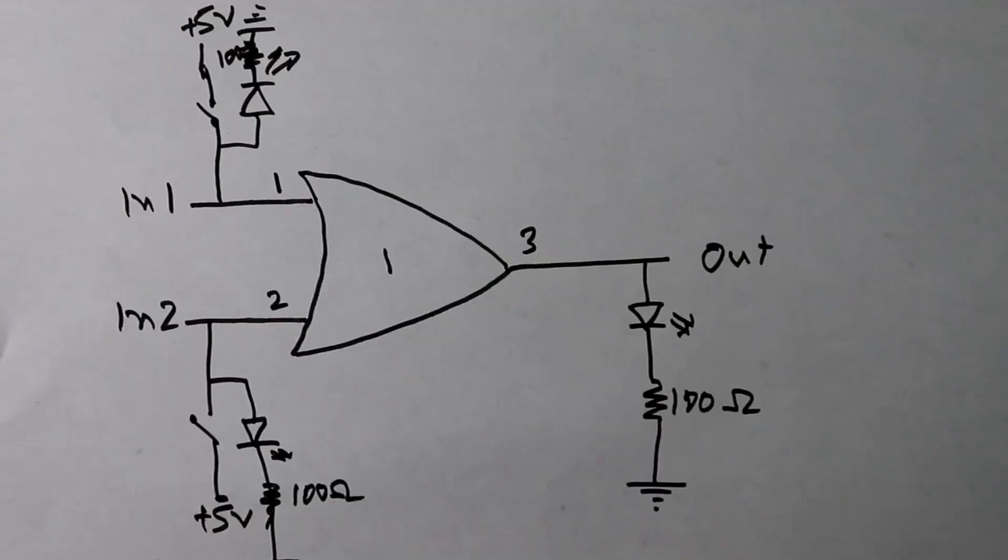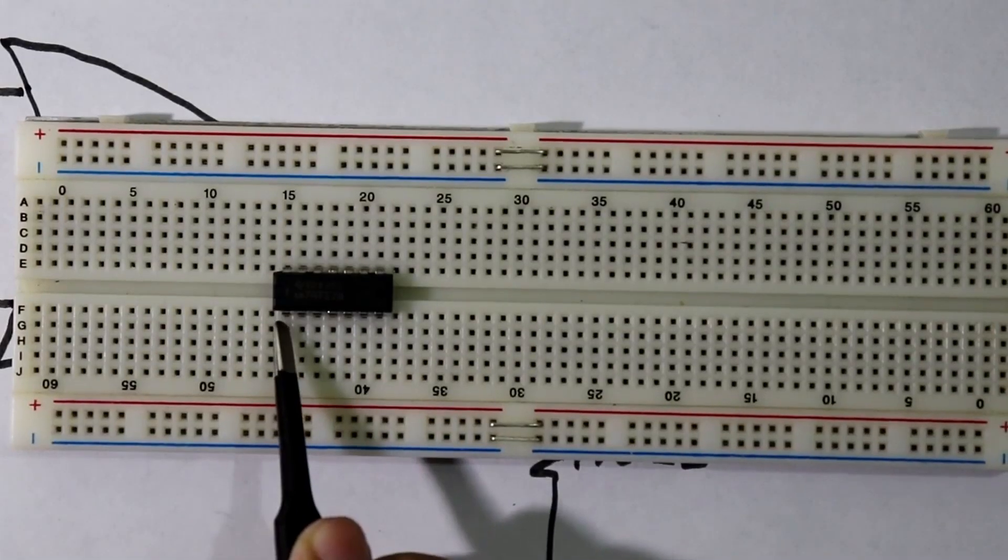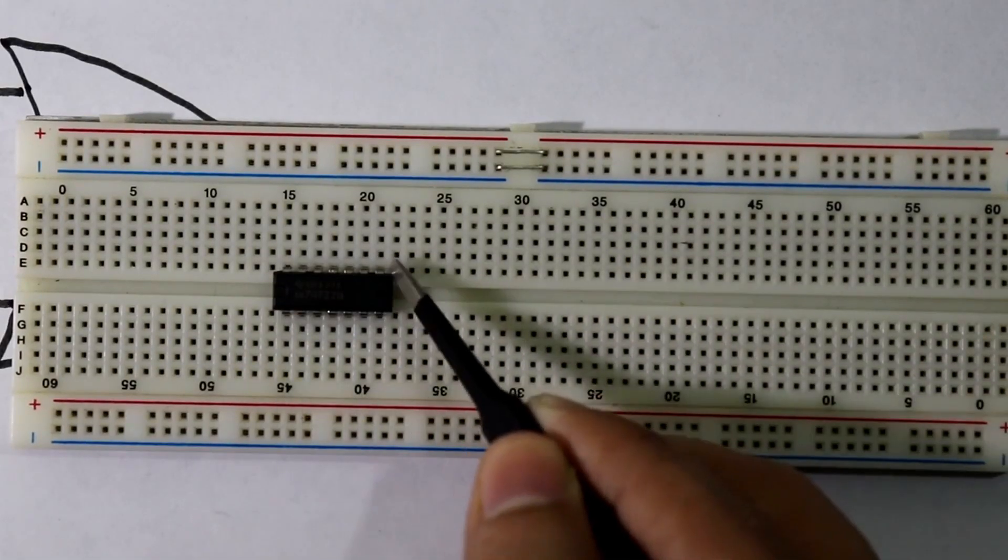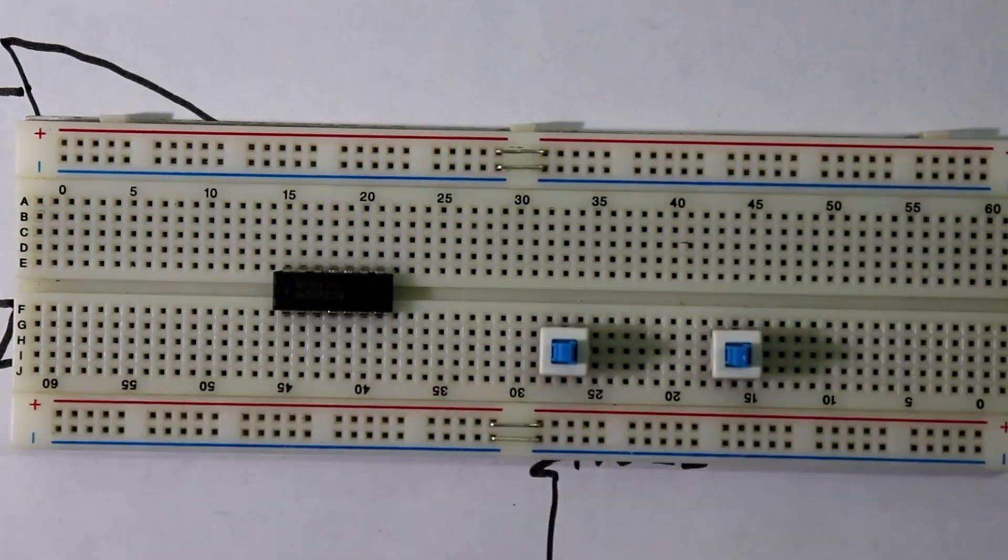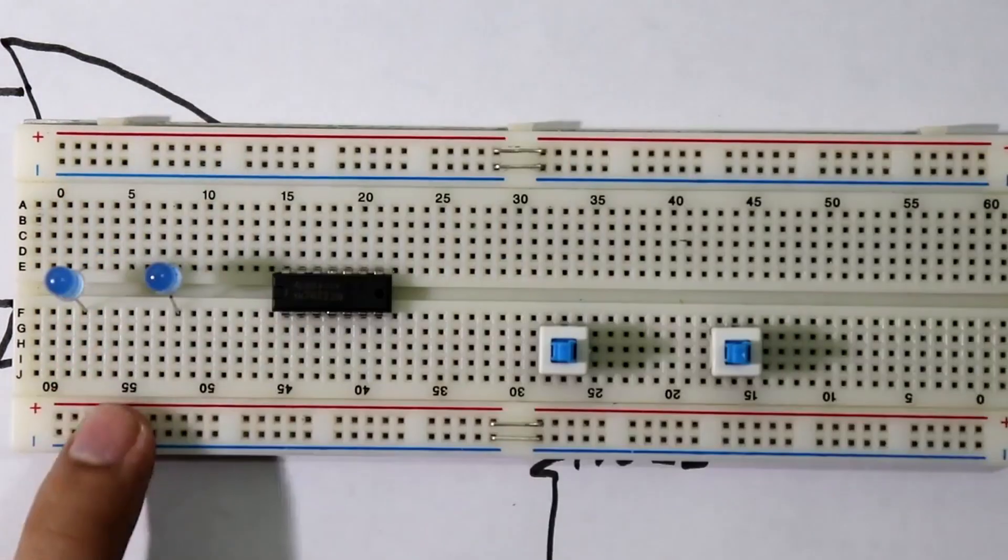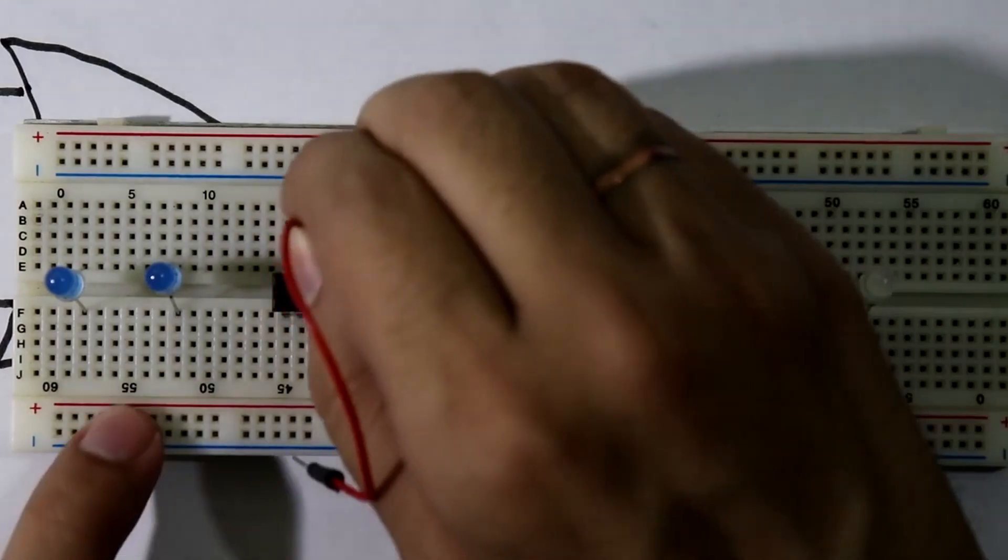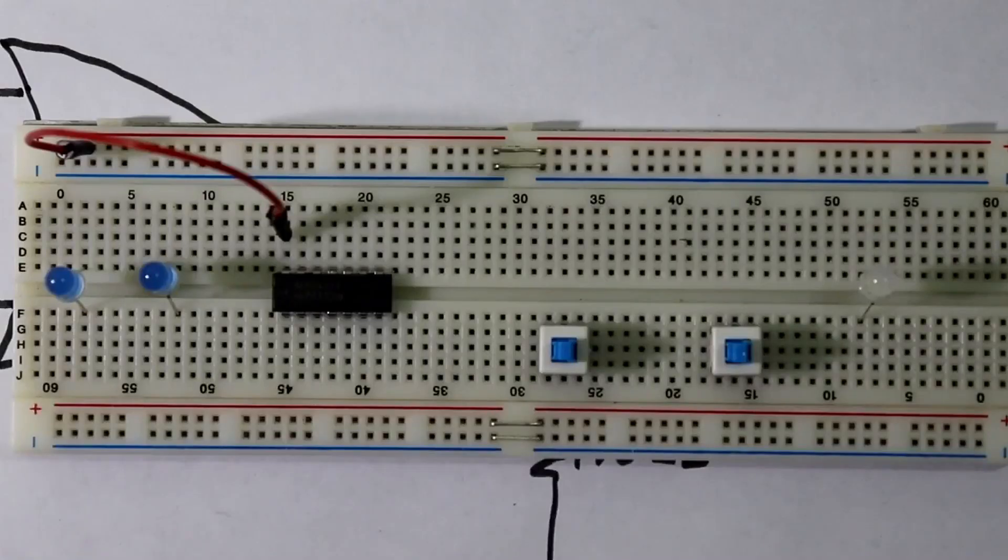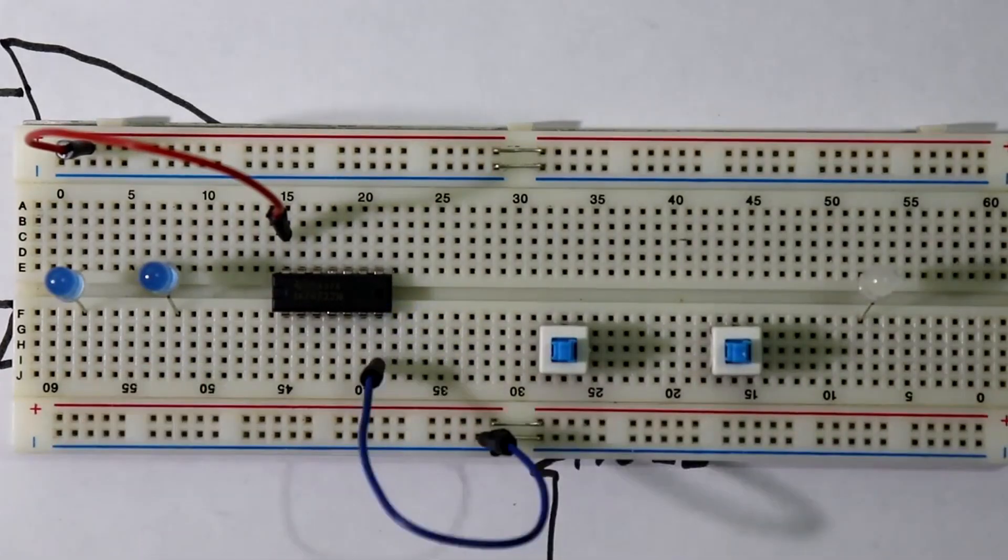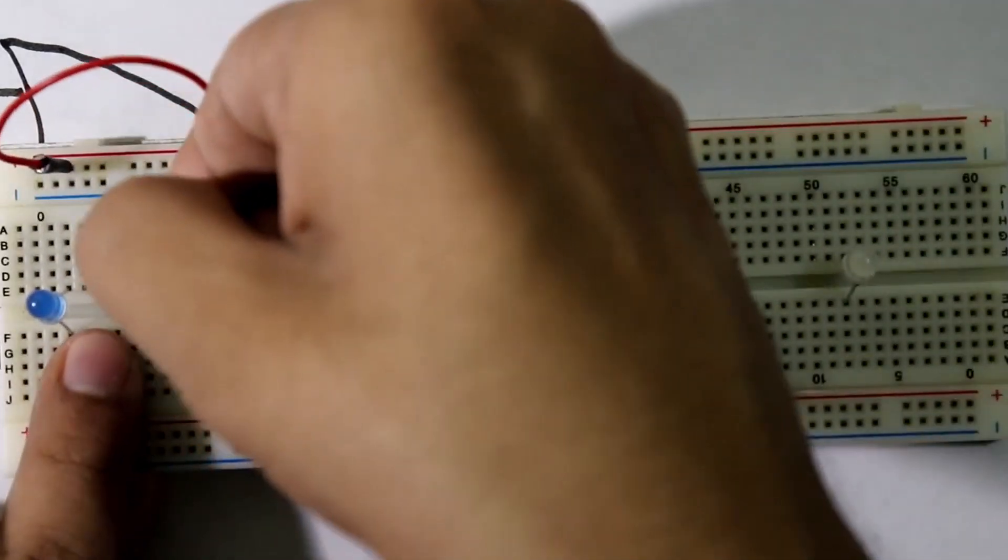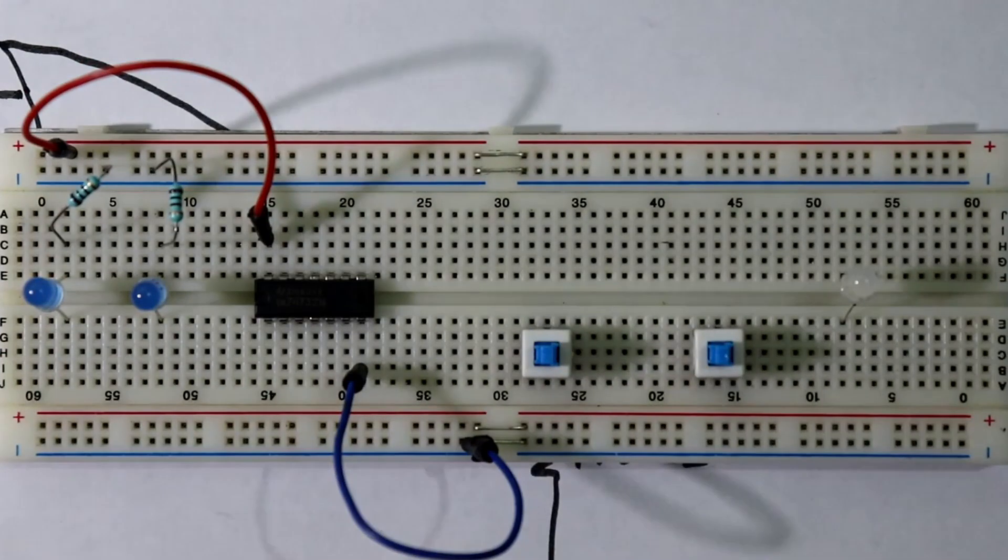So let's see this in the breadboard. Put the IC here pin number 1, 7, 8 and 14. 2 switches, 2 LED for the inputs. The output LED pin number 14 connected to the positive power rail. Pin number 7 goes to ground. Cathode of the LED is connected to the 100 ohms resistor and then it will go to ground.